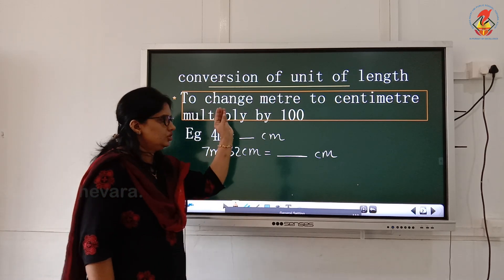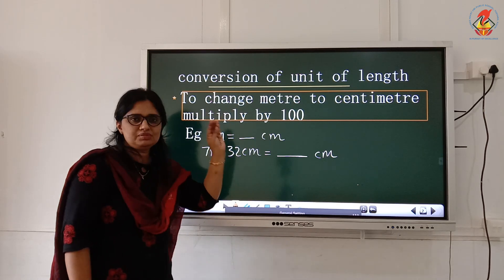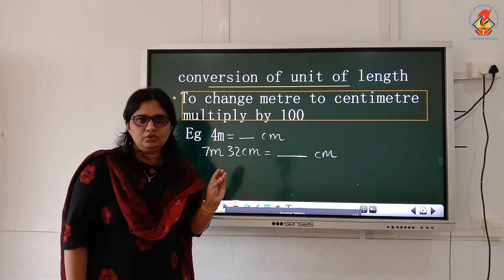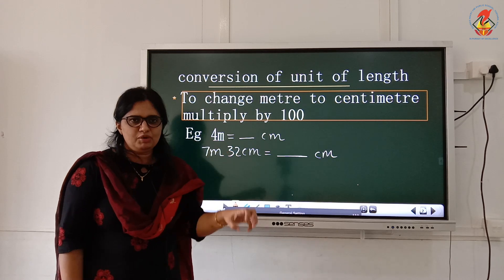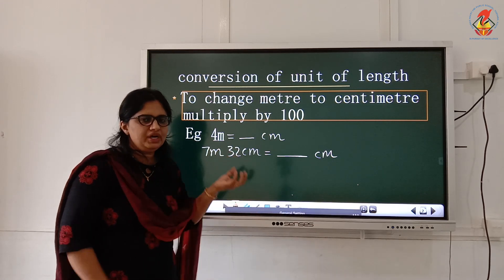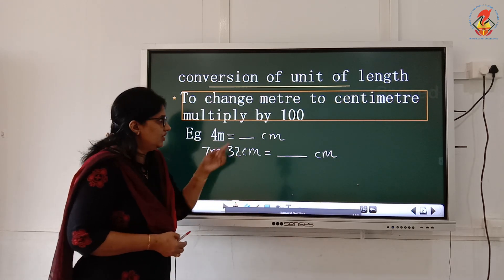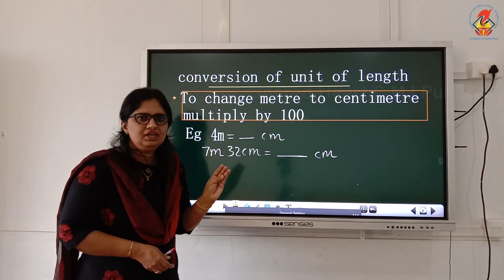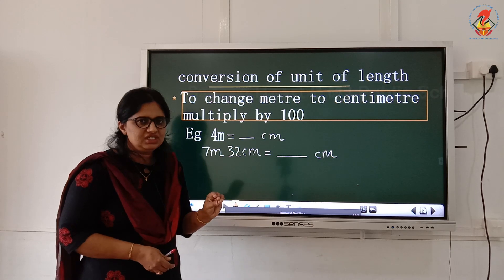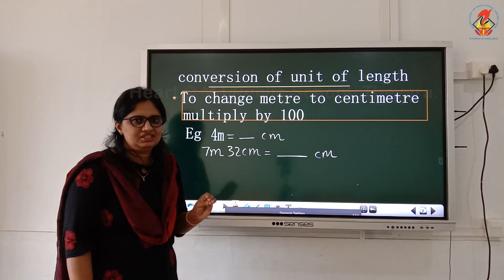To change bigger unit to smaller unit, you need to use multiplication only. Is it clear? Bigger unit to smaller unit, you need to use multiplication only. And multiply by 100. You know what is the reason? The relation between meter and centimeter is 1 meter equals 100 centimeter. That is why.